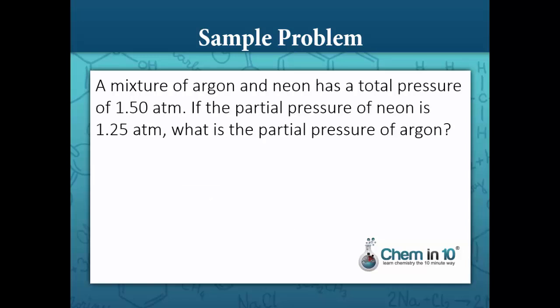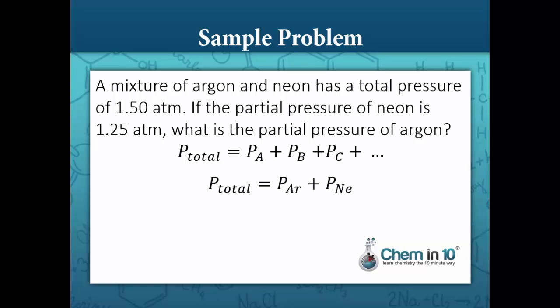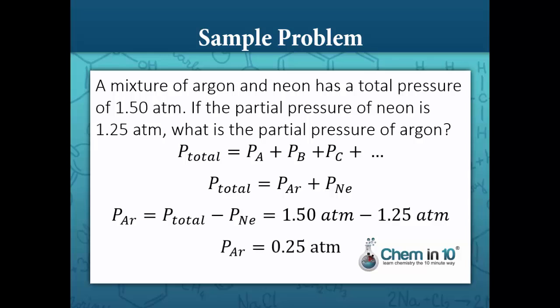Another sample problem: a mixture of argon and neon has a total pressure of 1.50 atmospheres. If the partial pressure of neon is 1.25 atmospheres, what is the partial pressure of argon? The total pressure equals the pressure of argon plus the partial pressure of neon. Solving for argon, we subtract the pressure of neon from each side: pressure of argon equals 1.50 atm minus 1.25 atm, which equals 0.25 atmospheres.